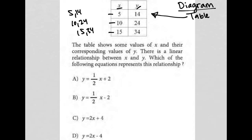So the question says the table shows some values of X and their corresponding values of Y. There is a linear relationship. So anytime I see the word linear relationship, my mind immediately says I need to use Y equals MX plus B. So I'm going to just write that down. There's a linear relationship between X and Y. Which of the following equations represents the relationship?